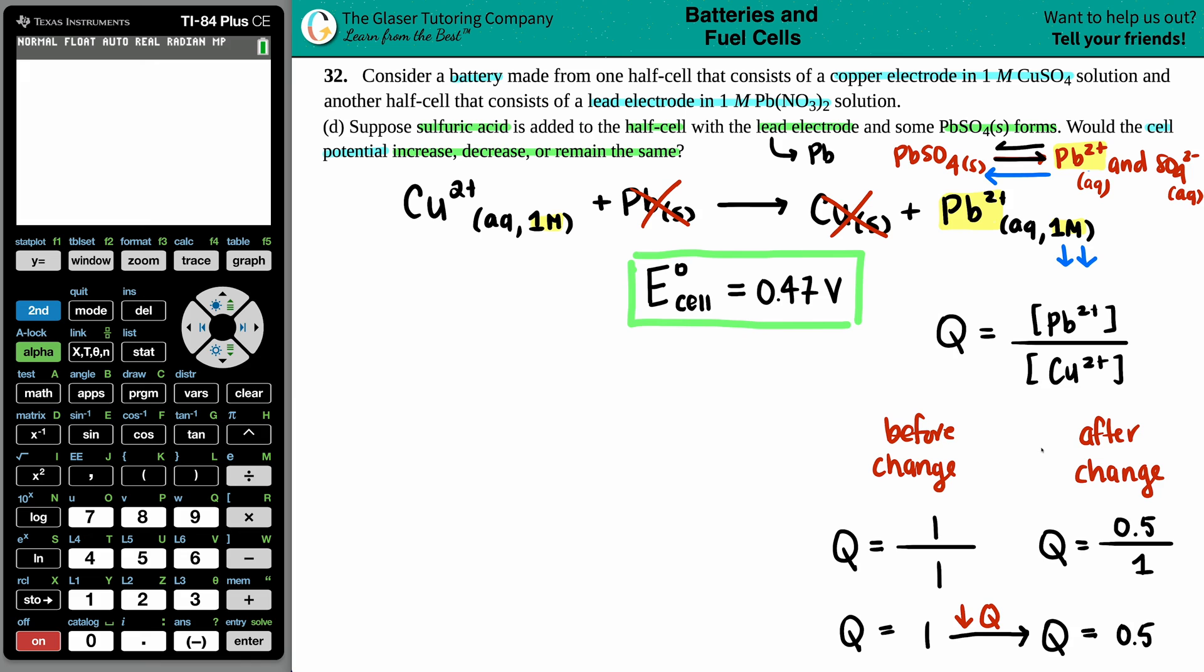Now, this is going to be important because now how am I going to link a Q value to the cell potential? We want to know if the cell potential would increase, decrease, or remain the same. Well, that's this equation right here.